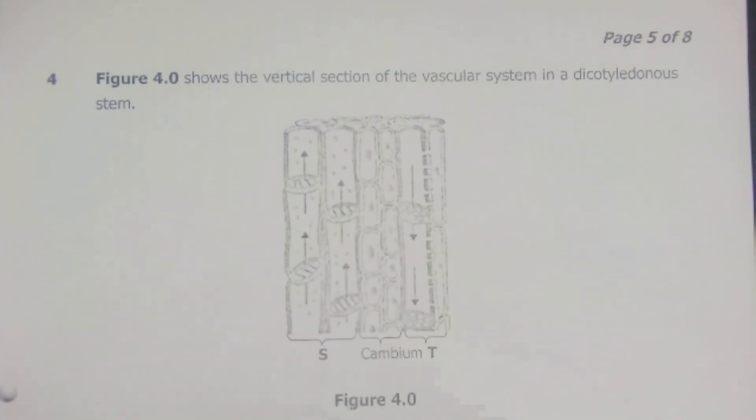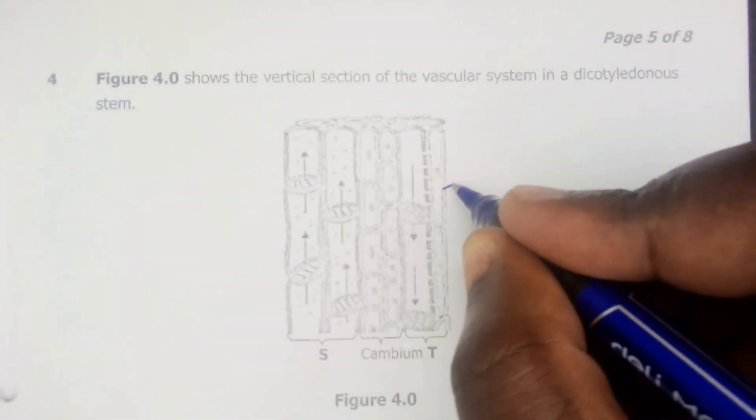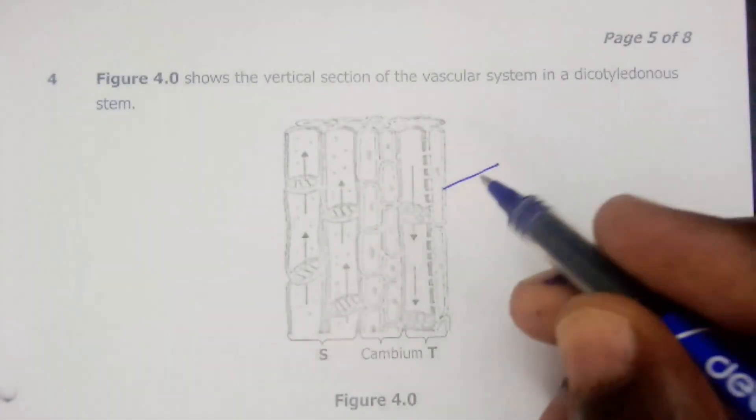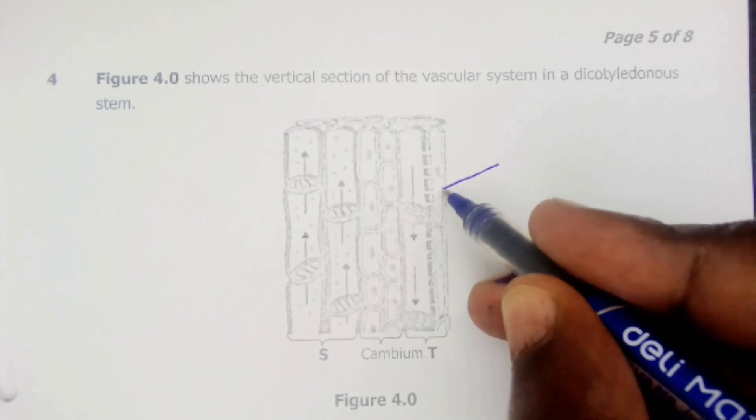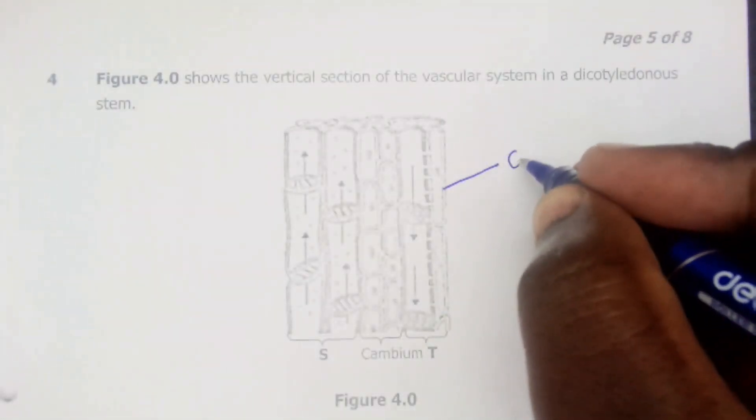Whenever we label, always make sure you use a label line. Don't use an arrow. So just draw a nice line there. And always start from where you are labeling to outwards, not going inwards because you might cross over the structure.